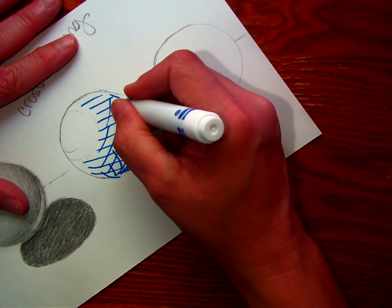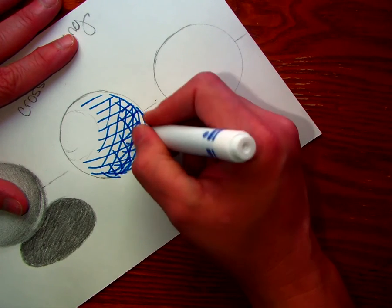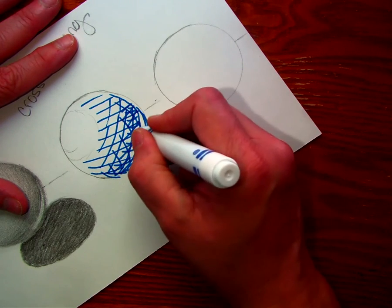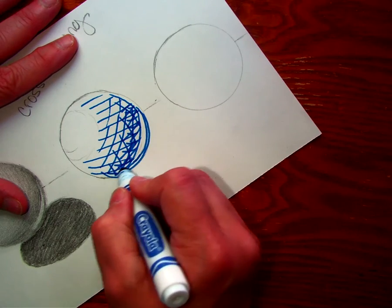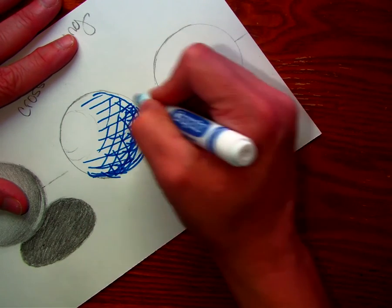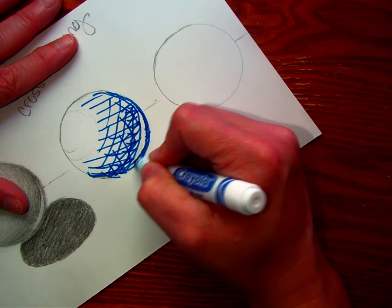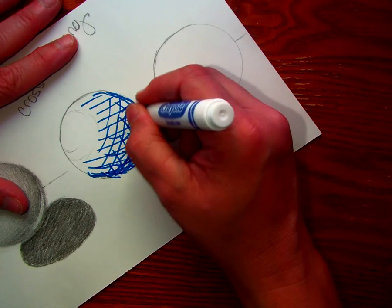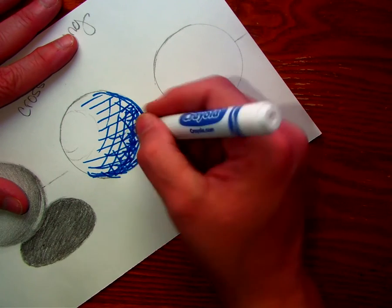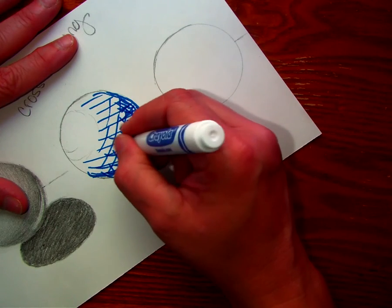So I would keep going then, different directions. And I can keep adding them where I want them to be really, really dark.